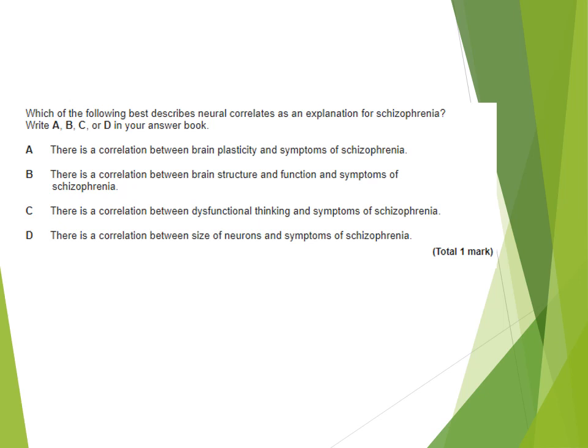Remember with paper 3 this is your option booklet, so you'll have a question and answer booklet. The options are: A — there is a correlation between brain plasticity and symptoms of schizophrenia; B — there is a correlation between brain structure and function and symptoms of schizophrenia; C — there is a correlation between dysfunctional thinking and symptoms of schizophrenia; D — there is a correlation between size of neurons and symptoms of schizophrenia. The answer is B. Remember neural correlates links to brain structure, which is part of a biological explanation of schizophrenia.